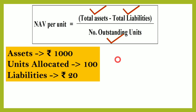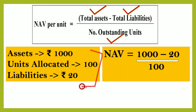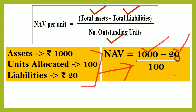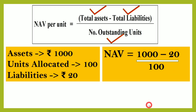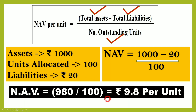Let's now calculate NAV with an example. Assume the mutual fund house raised rupees 1,000, units allocated to all investors are 100, and liabilities — such as brokerage or salary — stand at rupees 20. Putting these into the formula: NAV equals 1,000 minus 20, divided by 100, which gives 980 divided by 100 — that is rupees 9.8 per unit. That is how we calculate NAV in a broad sense.